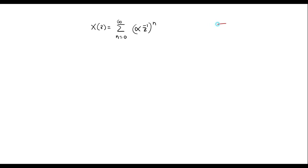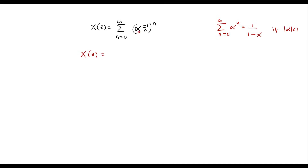We know that summation n equal to 0 to infinity of alpha power n is given by 1 upon 1 minus alpha, provided alpha is less than 1. Here if we compare this signal with that formula, we can say that (alpha Z inverse) is the alpha in that formula. So I can write X of Z is equal to 1 upon 1 minus alpha Z inverse.